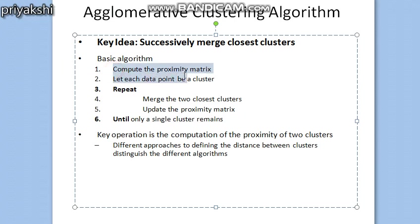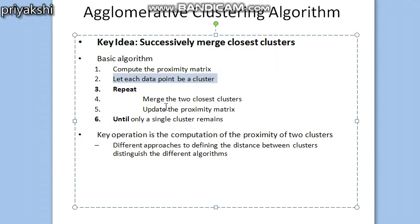Looking at the basic agglomerative hierarchical clustering algorithm pseudocode, the first step is to compute the proximity matrix. This distance matrix can be computed using any of the distance measures we have used, such as Euclidean, Manhattan, or Pearson. You first compute the proximity matrix, then